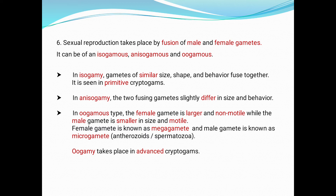The types of sexual reproduction depend upon the gametes involved. They are termed as isogamous, anisogamous and oogamous. In isogamy, gametes of similar size, shape and behavior fuse together. It is usually seen in primitive cryptogams. In anisogamy, exactly opposite to isogamy — the two fusing gametes slightly differ in size and behavior.